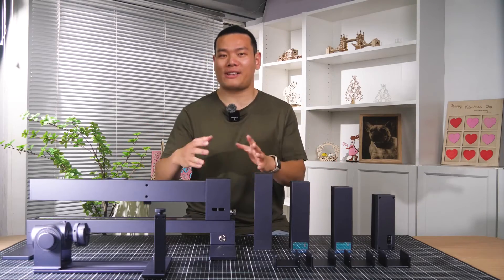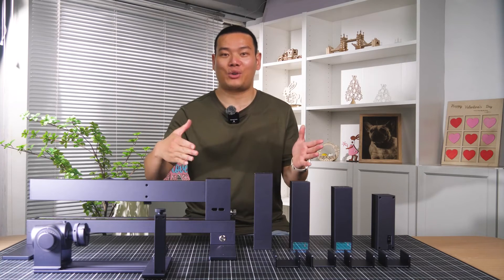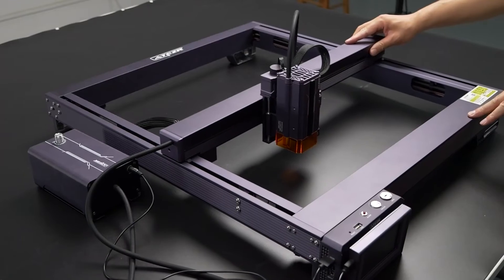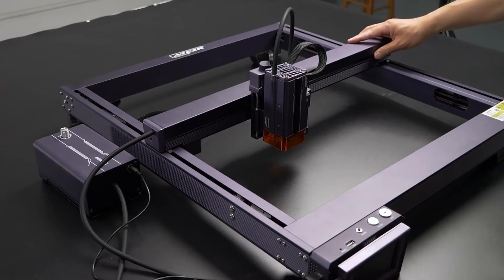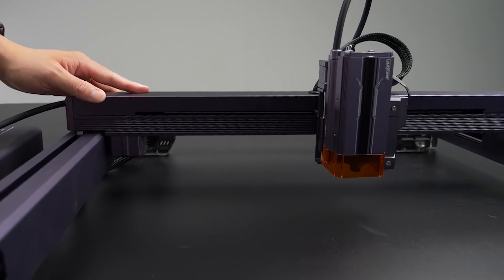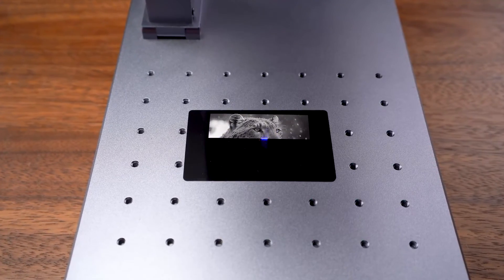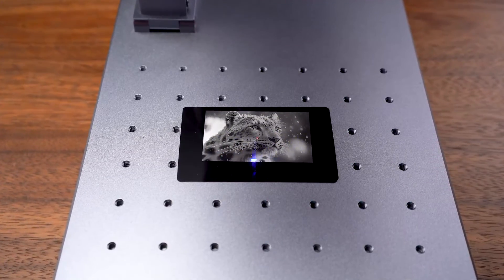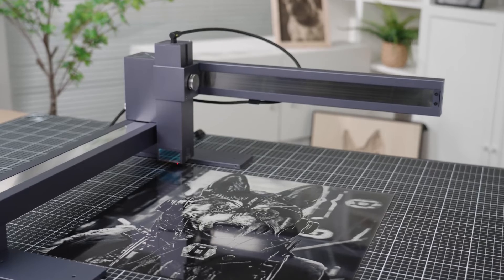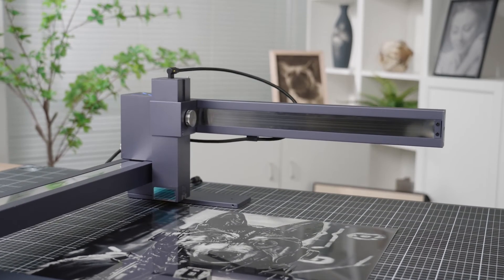You see, previously the engravers always had this or that problem. If they could engrave large sizes, the engraver always looked bulky and took up a lot of space. If they offered a dual laser feature that worked on a wide range of materials, the engraving size was always too small. But now with the LX1 series, all of these problems have been solved.